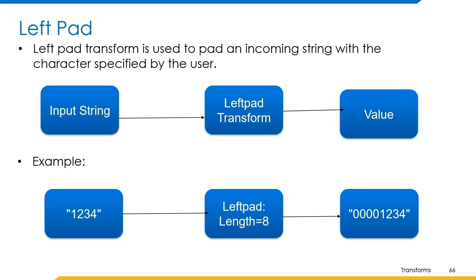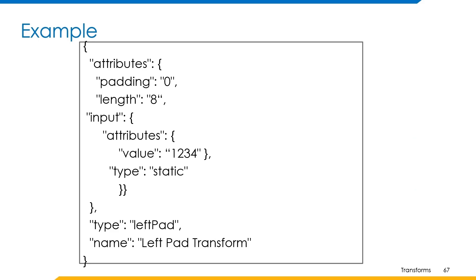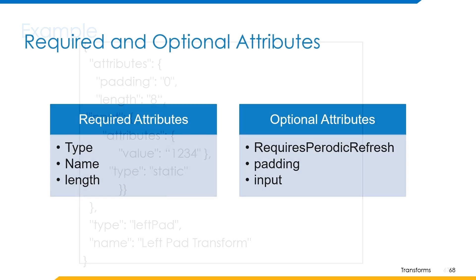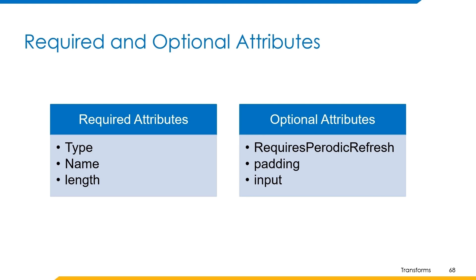Now let's understand how to build a transform using this operation. The example can be built in this format where the name of the transform is left pad transform and type is left pad. Input is specified in the input attribute, padding character is 0, and the total length is 8, so we can expect the output as 00001234. The required attributes are type, name, and length. The optional attributes are requires periodic refresh, padding, and input. If we skip padding, then by default a single space character is used for padding.